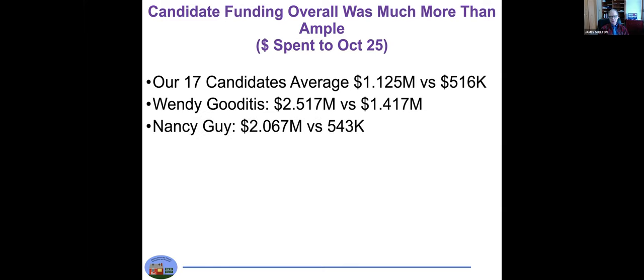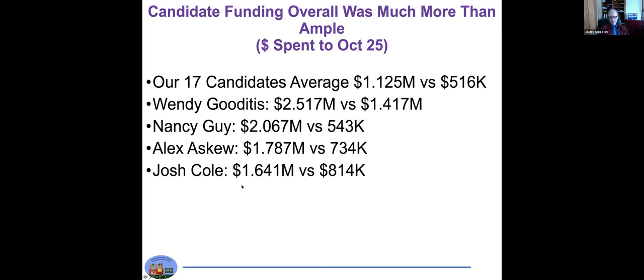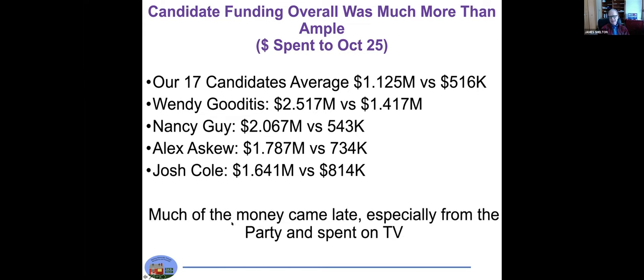Looking at specific candidates, Wendy Gooditis was at the top of the list, $2.5 million versus $1.4 million. Nancy Guy over $2 million, almost four times as much as her opponent. Alex Askew $1.8 million, over twice his opponent. Much of that money came late, especially from the party. It confirms my belief that this late money on TV is just not very effective.